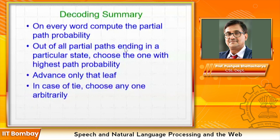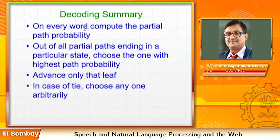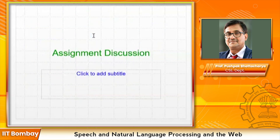The decoding summary is: on every word, compute the partial path probability; out of all partial paths ending in a particular state, choose the one with highest probability and advance only that leaf; in case of a tie, choose any one arbitrarily. This is dynamic programming, and you can code it efficiently to gain clear insight.